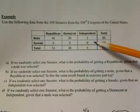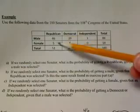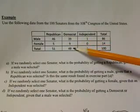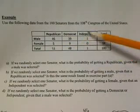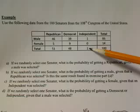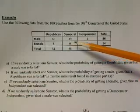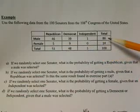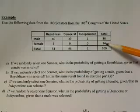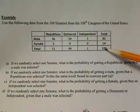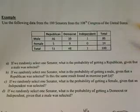Democrat females is 9, and there are no independent females, for a total number of Republicans of 51. Total number of Democrats is 48, and a total number of independents is 1. The total number of males is 86, the total number of females is 14, for a grand total of 100 Senators.